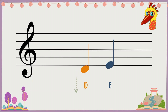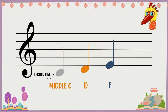Notes can also live in the ledger space. Now, after a space note, you have a line note! Yes. Which means, after D, there's this note — middle C. To show that it's different from a D, we draw a short line called the ledger line.